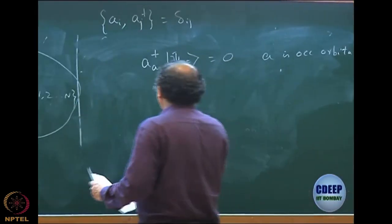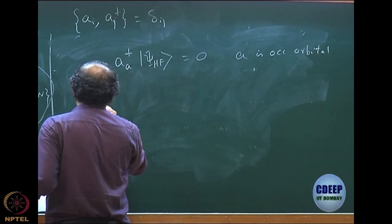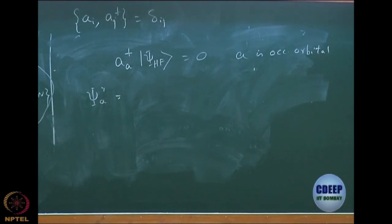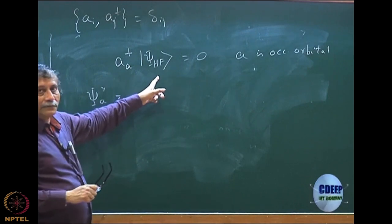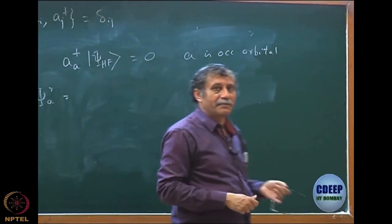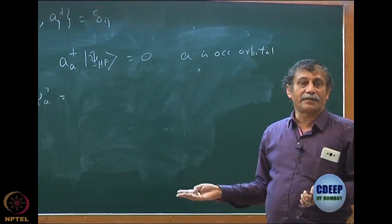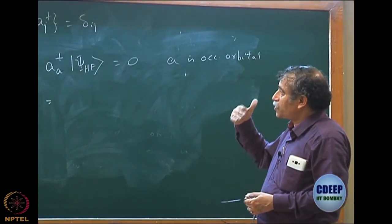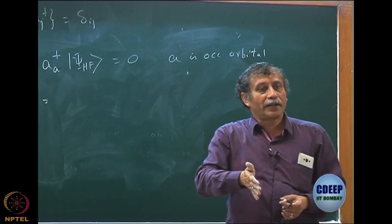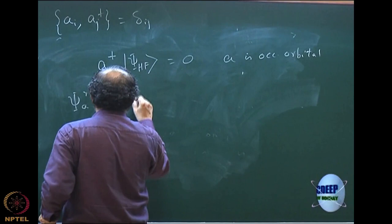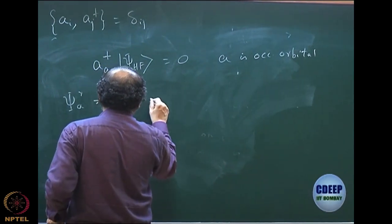Now, let us try to understand how to create a determinant which is psi_A^R from the Hartree-Fock, because this is important. I have to come to the actual picture of singly excited and doubly excited determinants. So I am essentially creating a singly excited determinant. What we are doing is: we are destroying A and in that same column we are creating R. The first thing we do is to destroy A and then to create R.